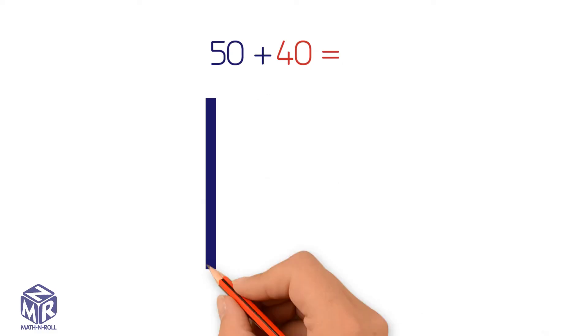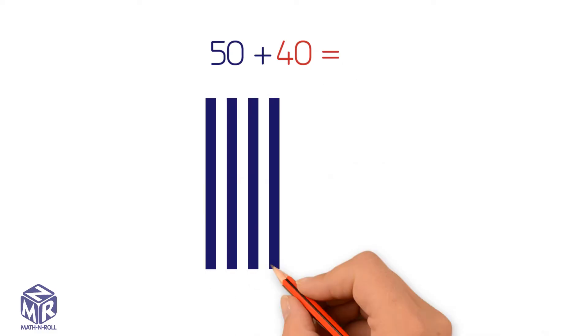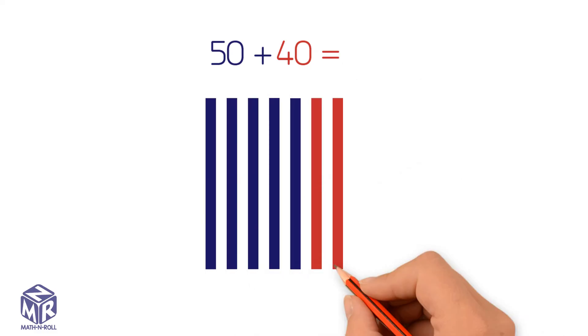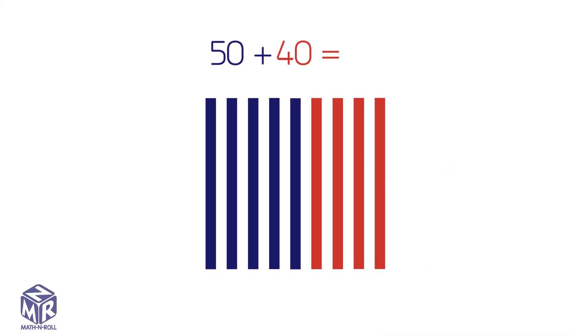Let's try another example. 50 plus 40. 50 has five tens and 40 has four tens. Let's draw it out. Add them together and we get nine tens or 90.